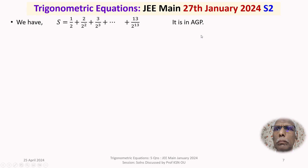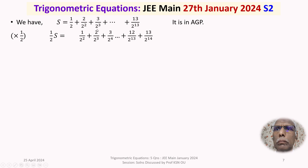S is an AGP. Multiply throughout by the common ratio 1/2: S/2 = 1/2² + 2/2³ + 3/2⁴ + ... + 12/2^13 + 13/2^14. Subtracting: S - S/2 = S/2 = 1/2 + (1/2² + 1/2³ + ... + 1/2^13) - 13/2^14. Taking 1/2 common from the first 13 terms gives 1/2·[1 + 1/2 + 1/2² + ... + 1/2^12] - 13/2^14.